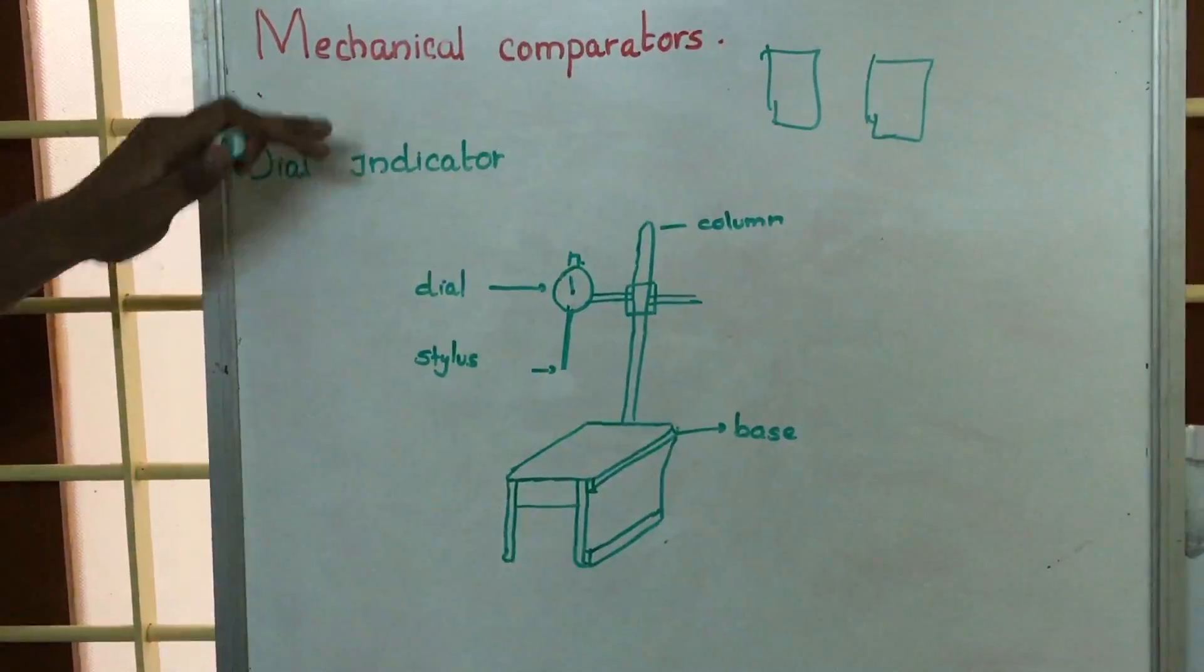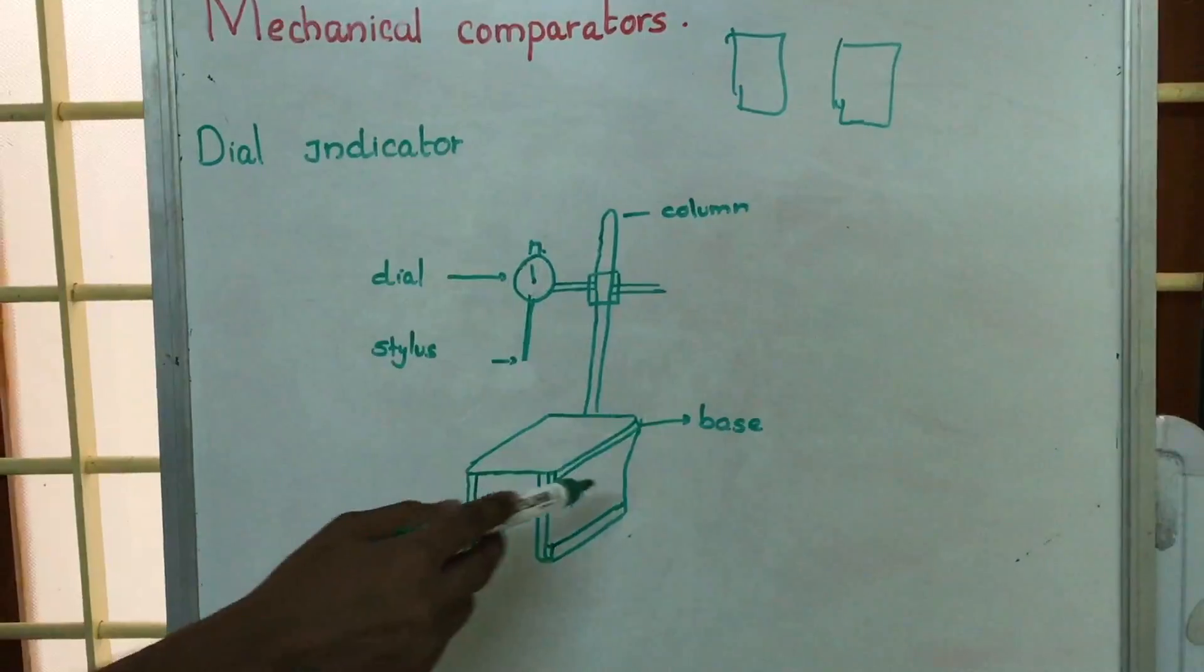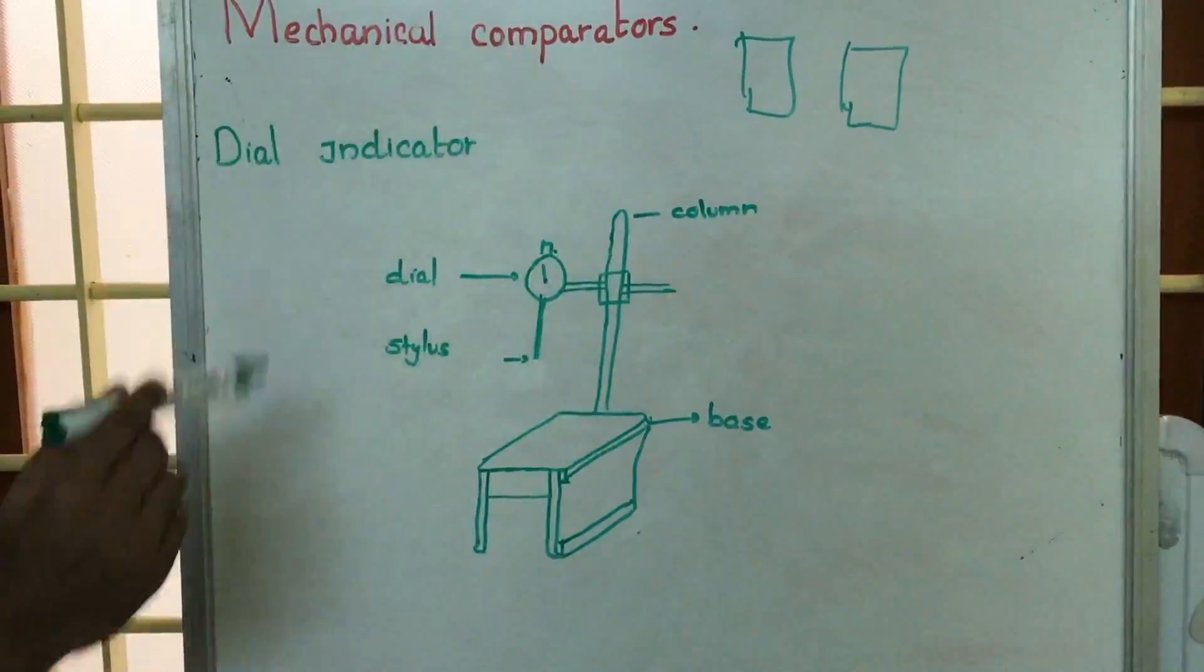So one type of Mechanical Comparator is Dial Indicator. As shown in figure, the main parts are base, stylus, dial and column.